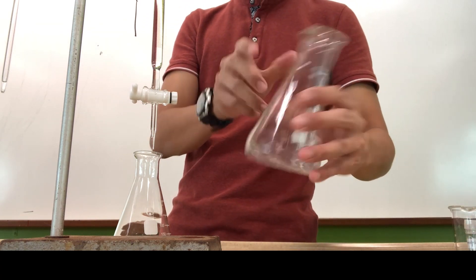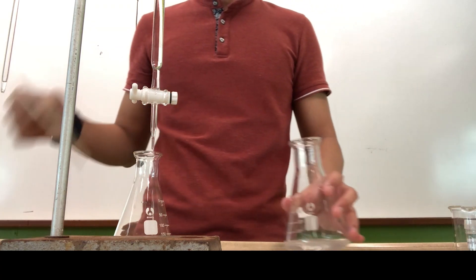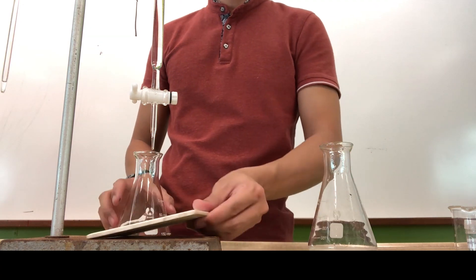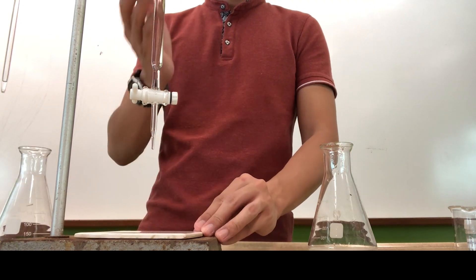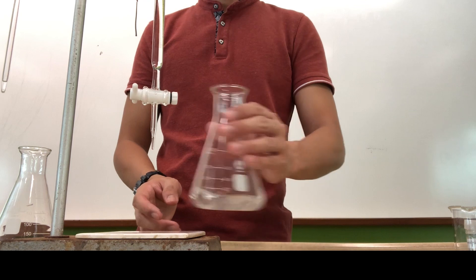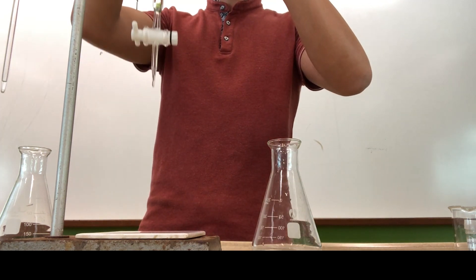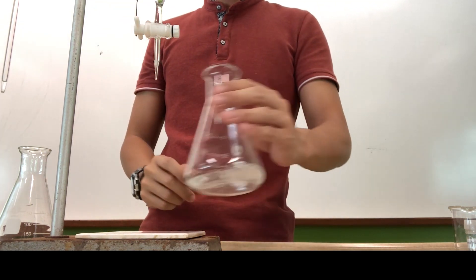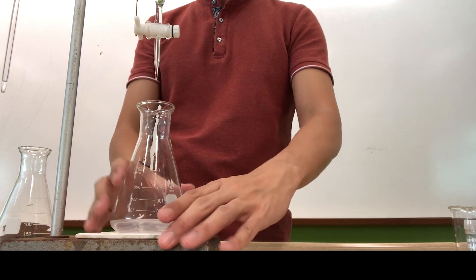Swirl it around to make sure that it is mixed well, and then place it on top of a white towel below your burette. Do ensure that your burette is being adjusted accordingly, so that the conical flask is already below it with the tip of the burette just slightly inside the conical flask.